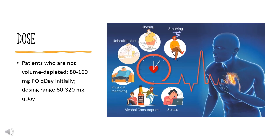Dose: The dose of this medicine will be different for different patients. Hypertension: Indicated for treatment of hypertension by lowering blood pressure. For patients who are not volume depleted, 80–160 mg orally once daily initially; dosing range 80–320 mg once daily. May increase to a maximum of 320 mg per day, or a diuretic may be added if additional antihypertensive effect is required. Antihypertensive effect is substantially present within 2 weeks and maximal reduction is generally attained after 4 weeks.